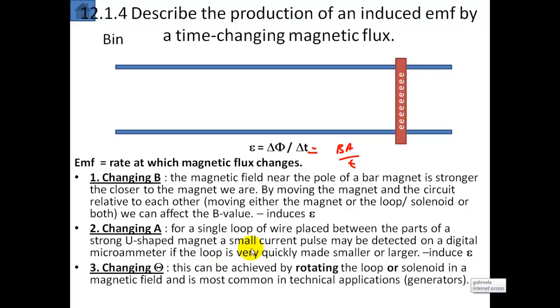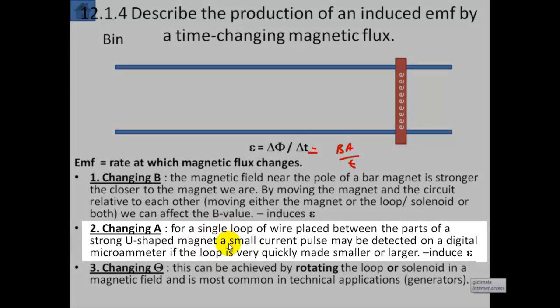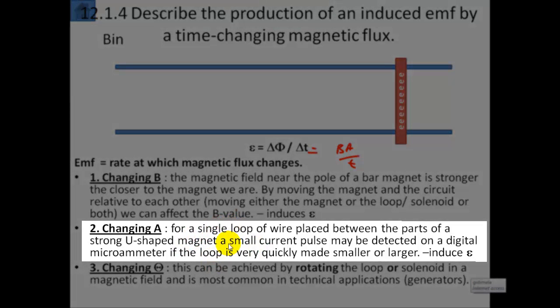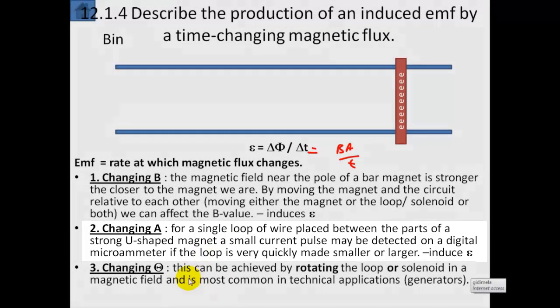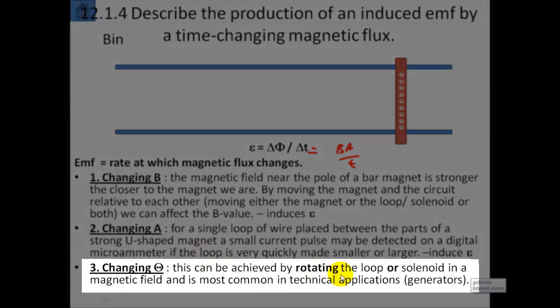Another way is by changing A. If you make the area which sweeps through the magnetic field larger or smaller, you can change the EMF. The rate at which it changes will determine the EMF. This can be achieved by rotating the loop or solenoid in a magnetic field, and this is most common in technical applications such as generators.